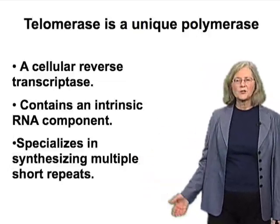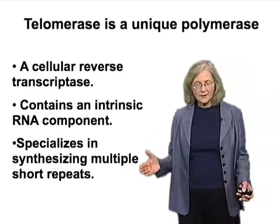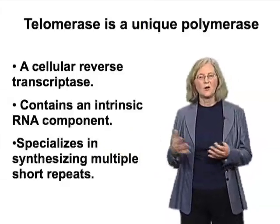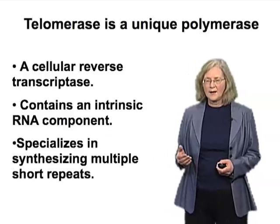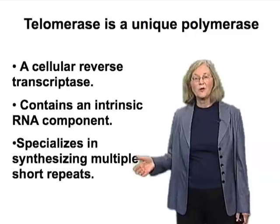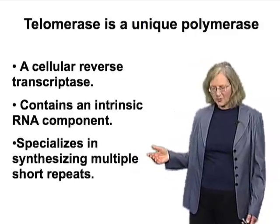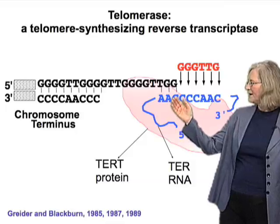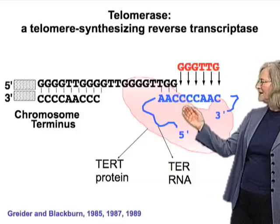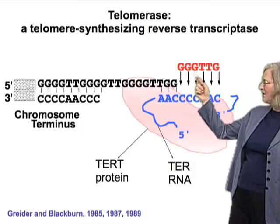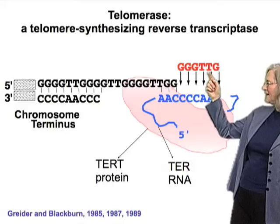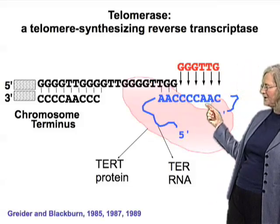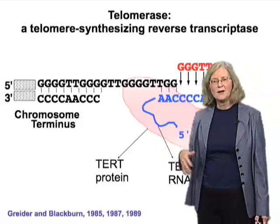Unlike the reverse transcriptases that copy, say, the HIV viral genome — a genome thousands of nucleotides long with complicated sequence encoding proteins — this enzyme copies very short sequences over and over again by aligning the DNA end on the template. To complete the thought: after polymerizing all the nucleotides onto the DNA end, you have a new DNA end that ends with TTG, which will realign on the AACCCC portion for another round of synthesis. This can go on in the test tube for many repeats.